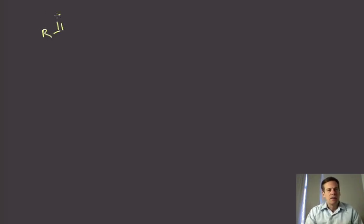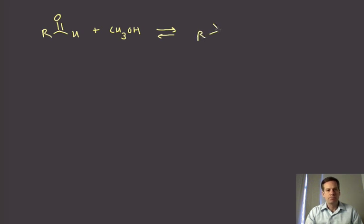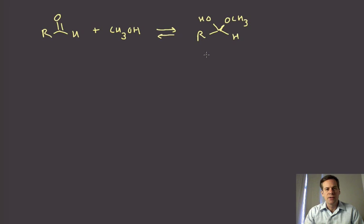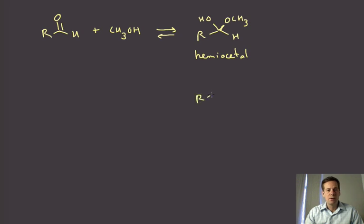The same process we talked about for the hydration of carbonyls can also occur if instead of using water we have an alcohol. An alcohol can participate in that exact same process. If we take an aldehyde in the presence of an alcohol — using methanol to illustrate — there can be an equilibrium where the alcohol adds to the carbonyl, giving us a product with an alcohol and an alkoxy group on the same carbon. This functional group is called a hemiacetal.